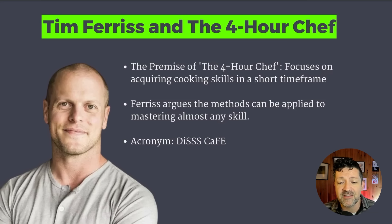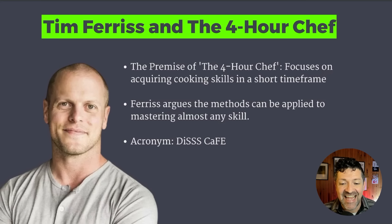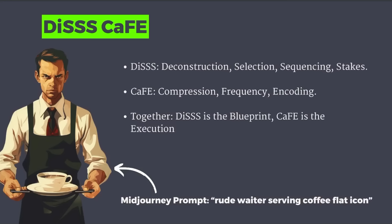Ferriss argues that the methods can be applied to mastering almost any skill, and he uses the acronym DiSCAFÉ to help you remember how to build these skills. DiS stands for Deconstruction, Selection, Sequencing, and Stakes. CAFE is Compression, Frequency, and Encoding. Together, DiS is the blueprint and CAFE is basically the execution.